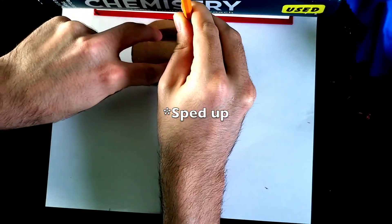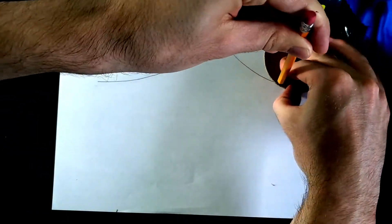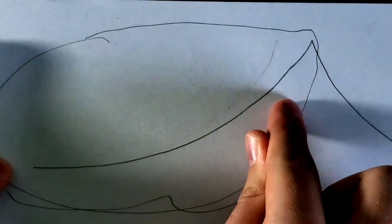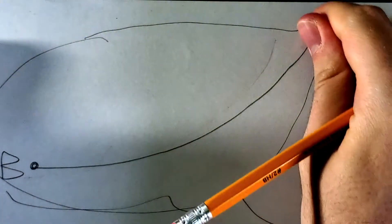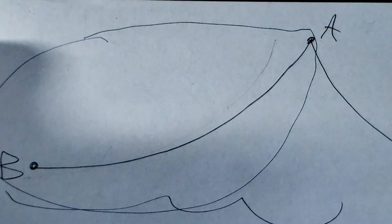A cycloid is traced by taking a circle, poking a hole at the edge, rolling it along a surface, and drawing out that point. The brachistochrone curve is the fastest path from A to B — it comes out of something very simple, just rolling a circle. If you draw it out just right, you get that path of least time called the brachistochrone.